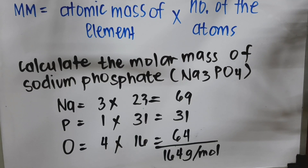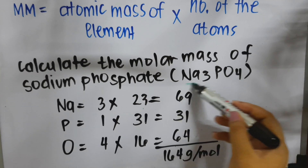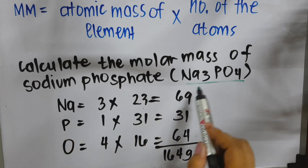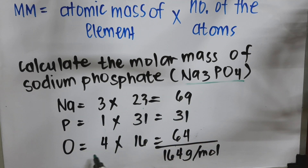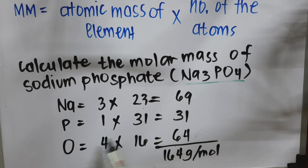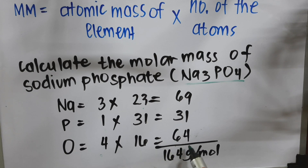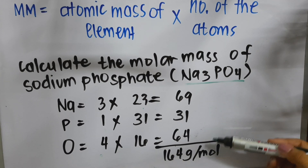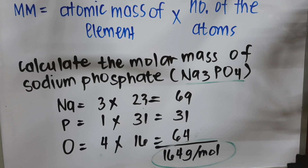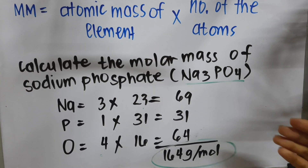Let's find the answer. As we can see in the formula Na₃PO₄, we have three elements: Na, P, and O. We have 3 sodium, 1 phosphorus, and 4 oxygen. Multiplying by the respective atomic mass: 3 times 23 equals 69, 1 times 31 equals 31, and 4 times 16 equals 64. Adding all together, we get 164 grams per mole. That is the molar mass of sodium phosphate.